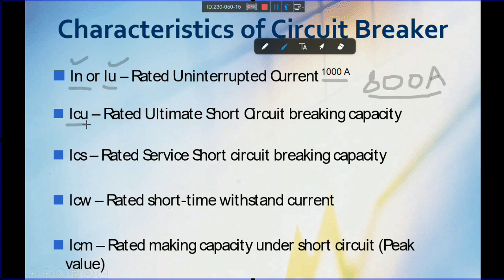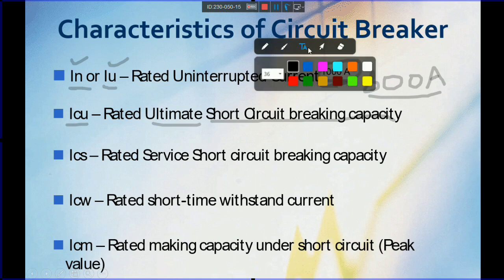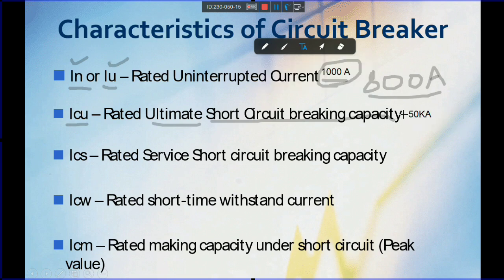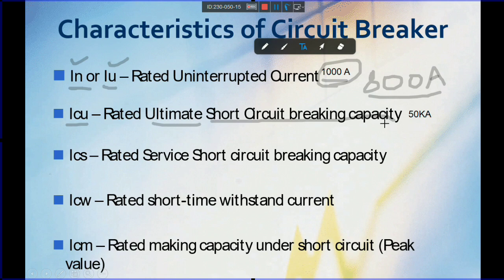The next parameter is ICU — the ultimate short circuit breaking capacity. 'Ultimate' means maximum. For an ACB, there are several breaking capacity options available, for example 42 kA, 50 kA, 65 kA, 70 kA, and 80 kA. For higher ranges, breakers are available even up to 200 kA. 50 kA means 50,000 amps. This is the rated ultimate breaking capacity under short circuit conditions.